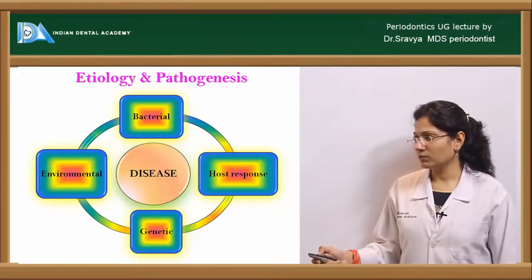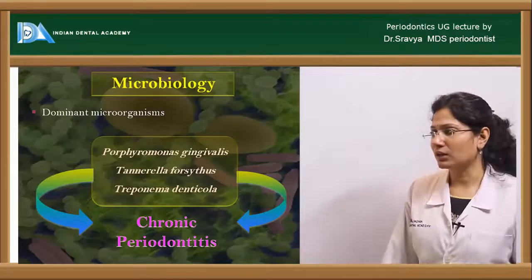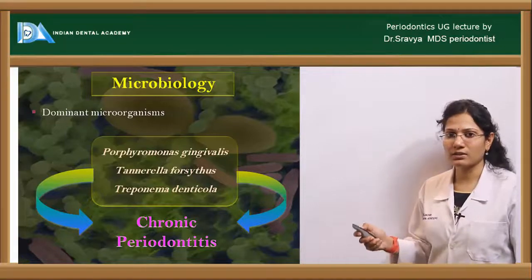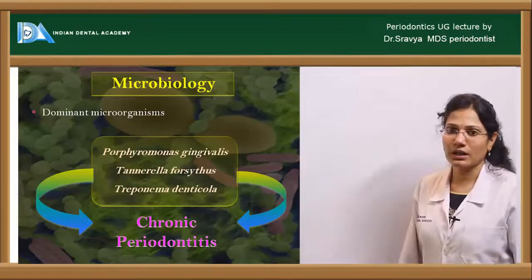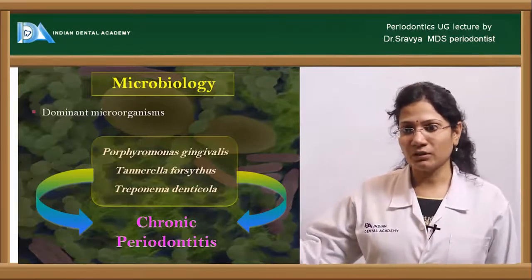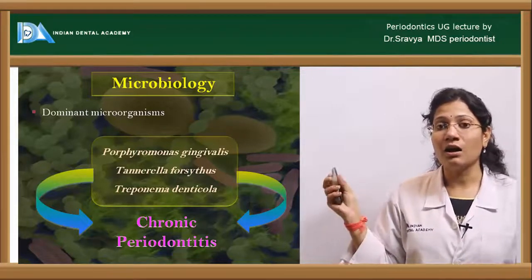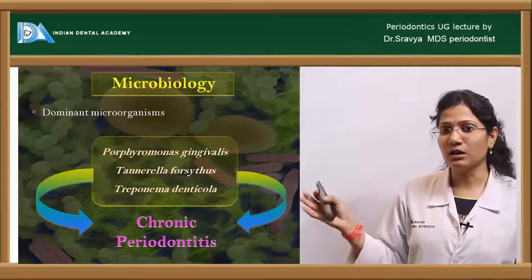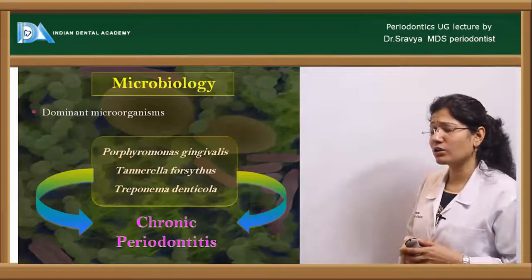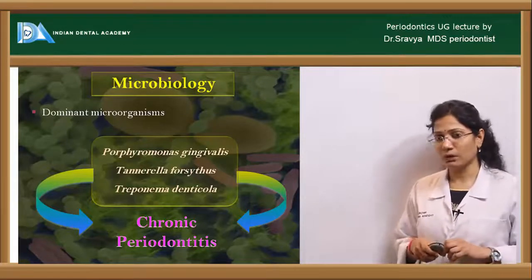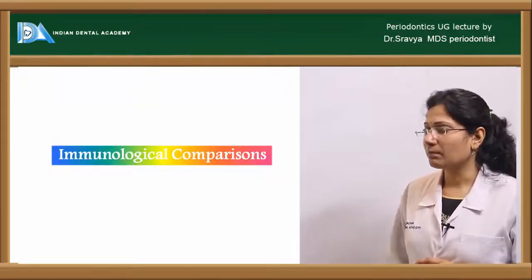The most dominant organisms in chronic periodontitis are Porphyromonas gingivalis, Tannerella forsythia, and Treponema denticola. These pathogenic microorganisms belong to the red complex of bacteria — as described by Sokransky — and are late colonizers responsible for bleeding on probing. These are the key pathogens involved in chronic periodontal disease.